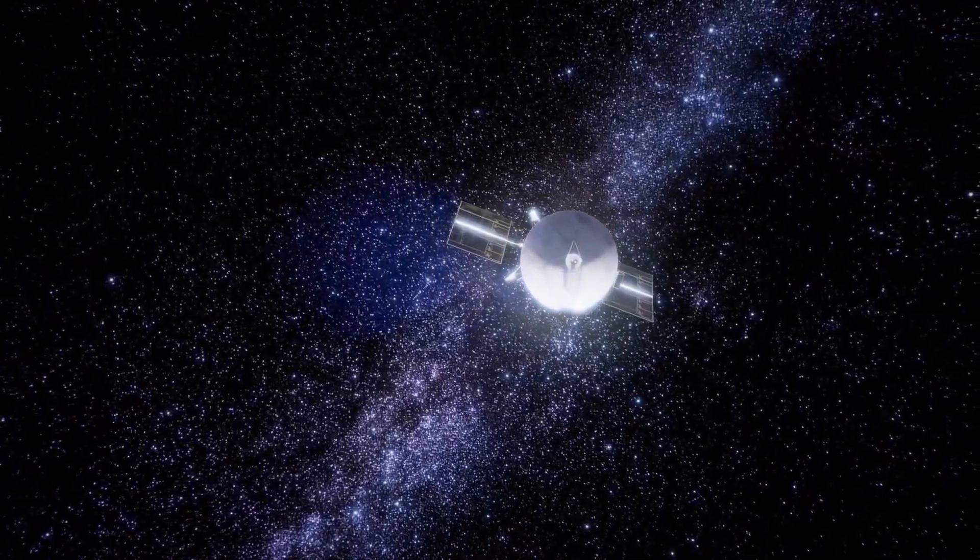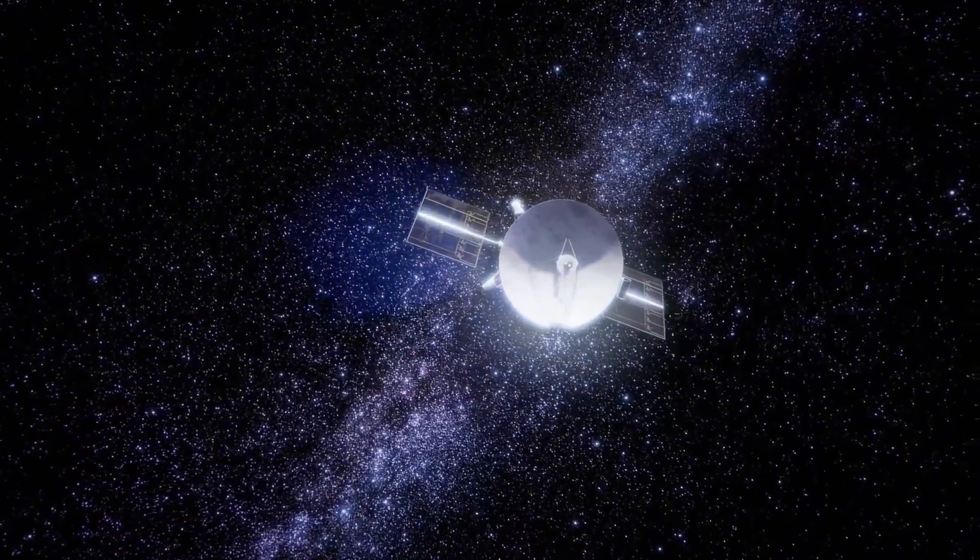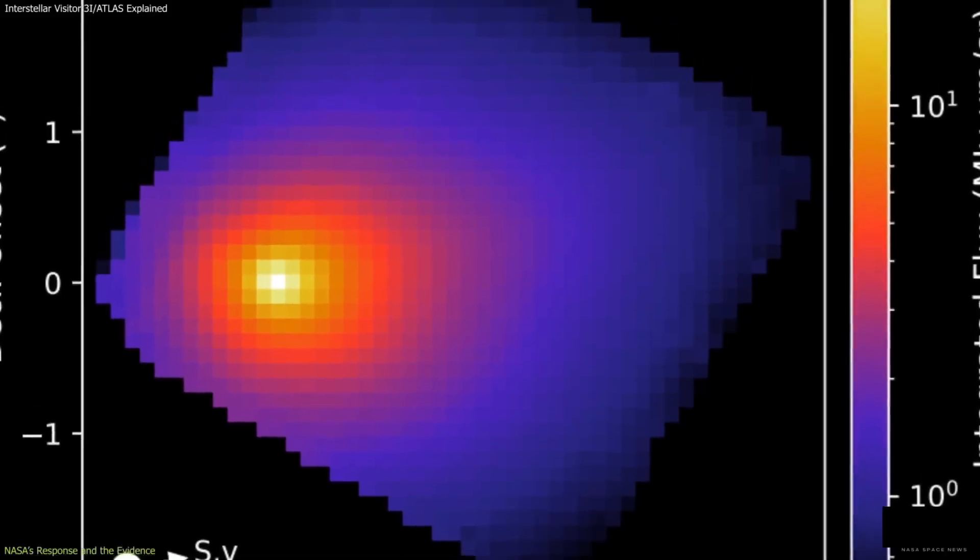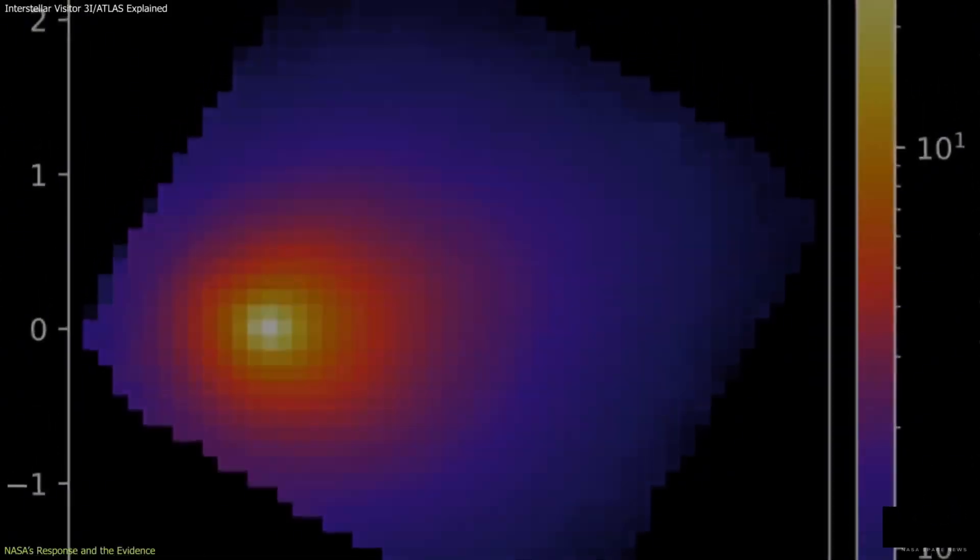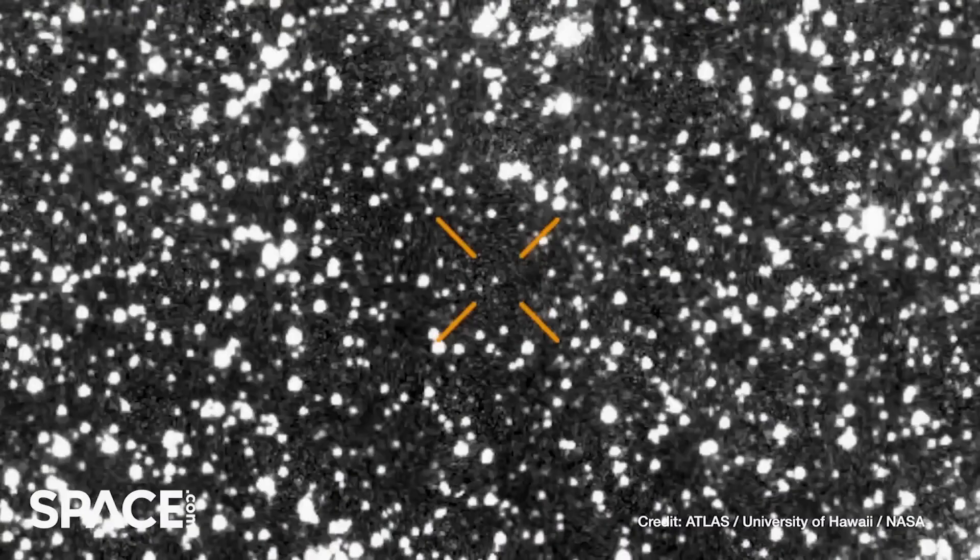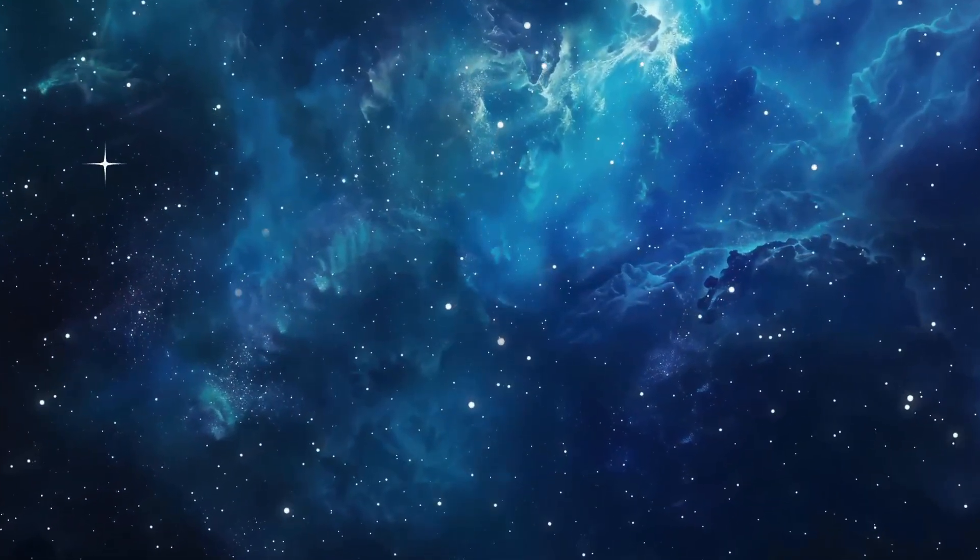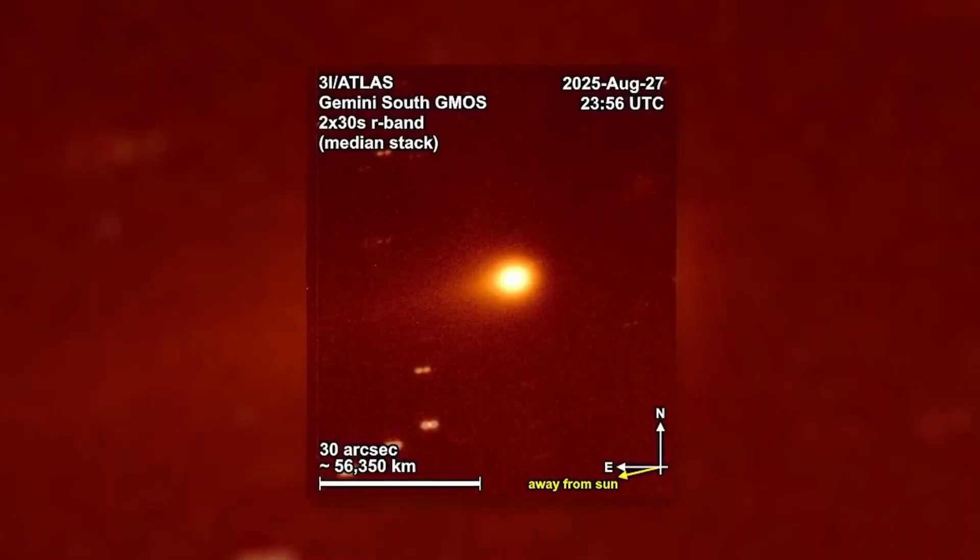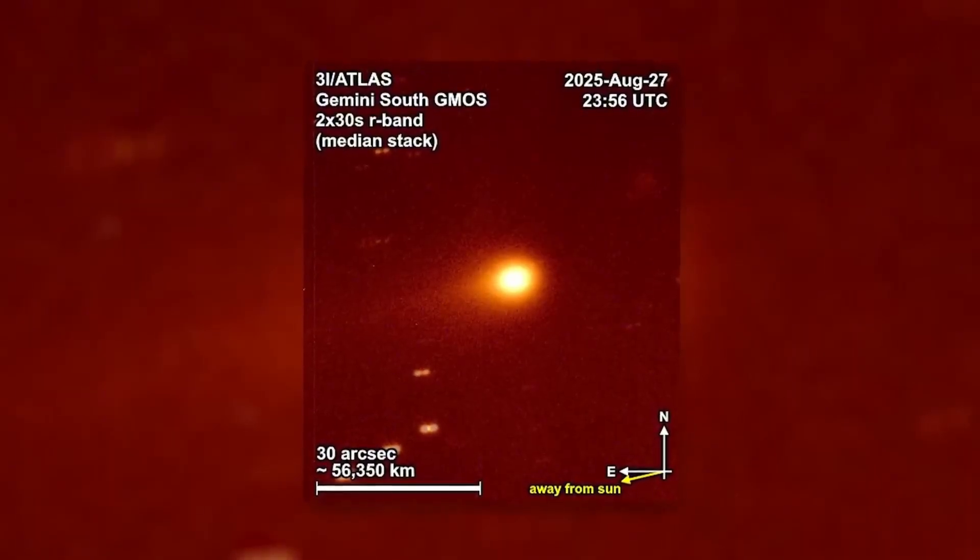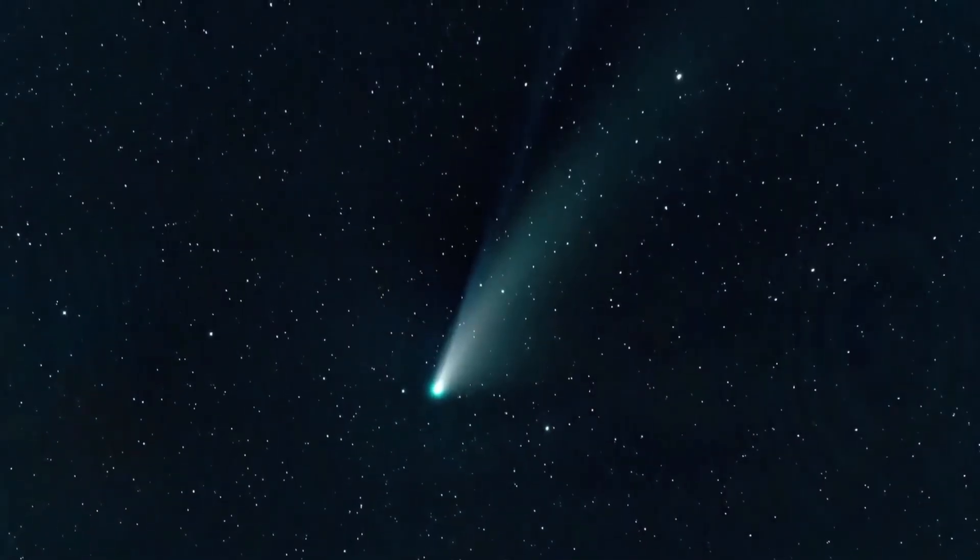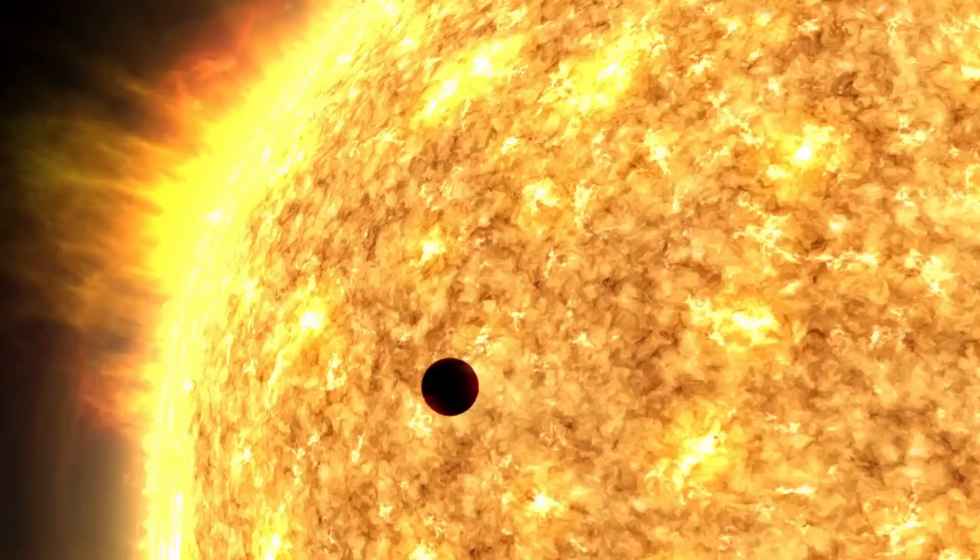For now, the scientific consensus remains cautious. Most researchers favor natural explanations, however unusual. The sunward glow might result from asymmetric heating, with reflective materials concentrating light on one hemisphere. The orbital alignment could be coincidence, magnified by observational bias. Yet even under conservative assumptions, 3I Atlas stands as a scientific marvel: a massive, intact fragment of another star's planetary system, offering a rare glimpse of matter forged under alien conditions.